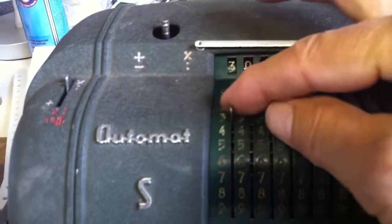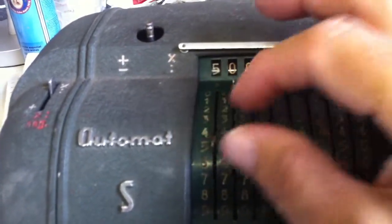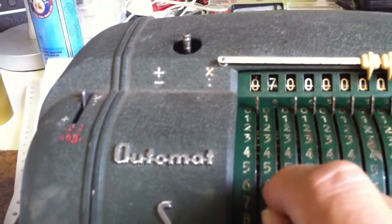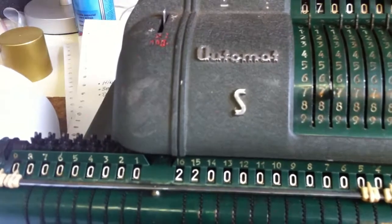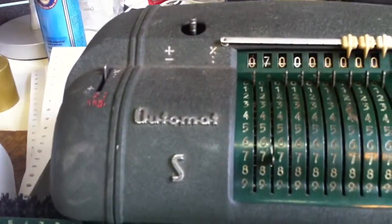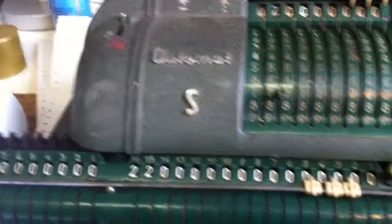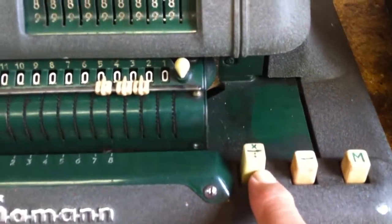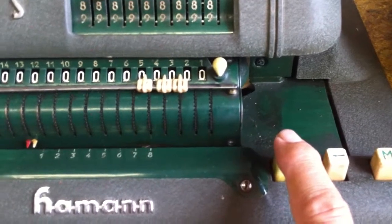Now I set the divider to 0 and 7. So we will divide 22 by 7. I'm pressing this big dividing key and let's start.